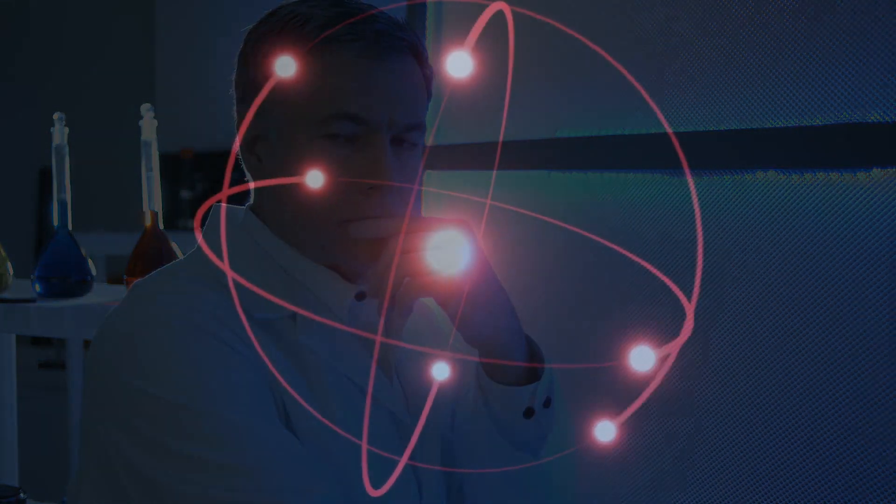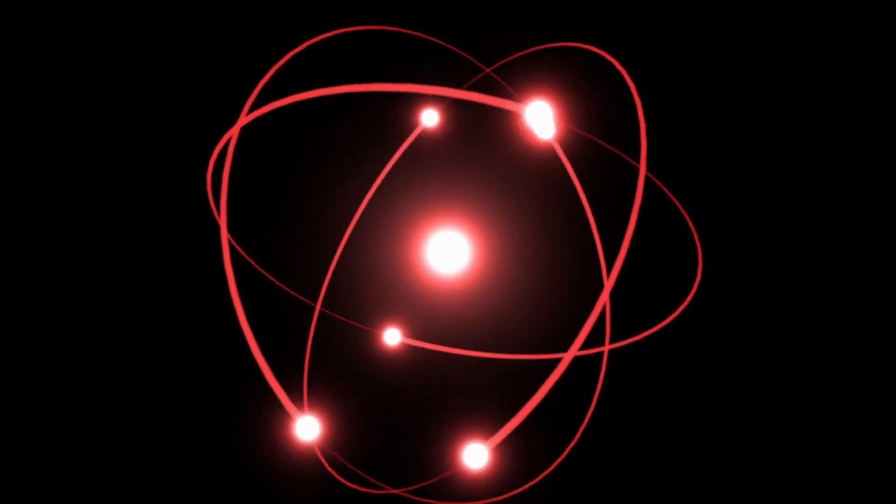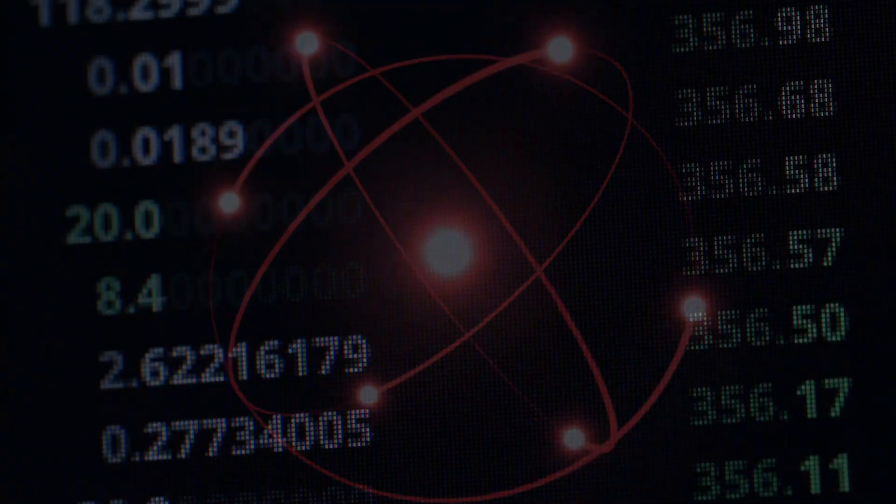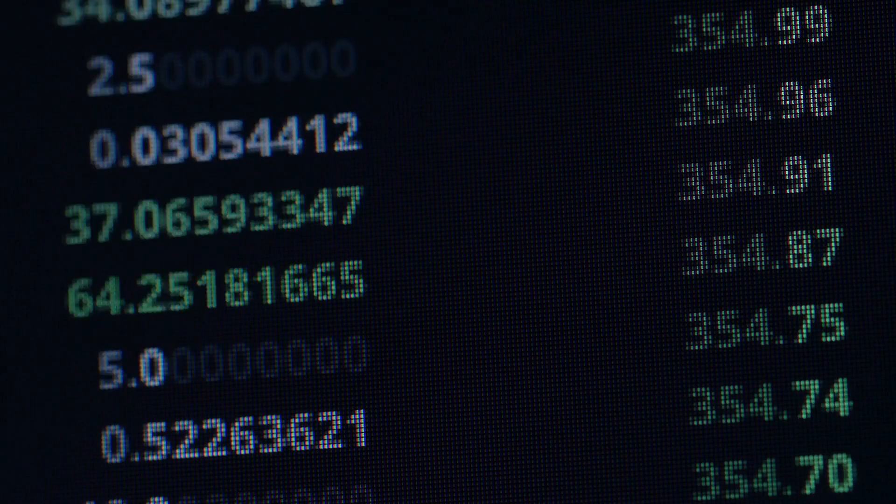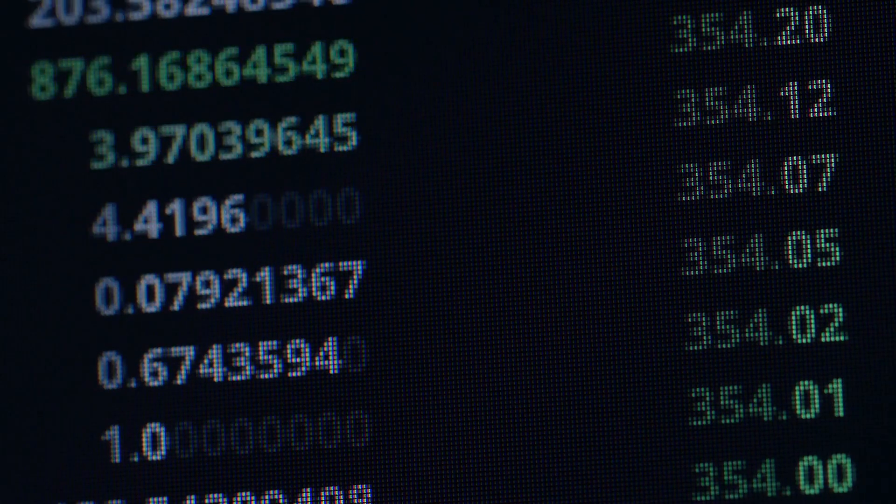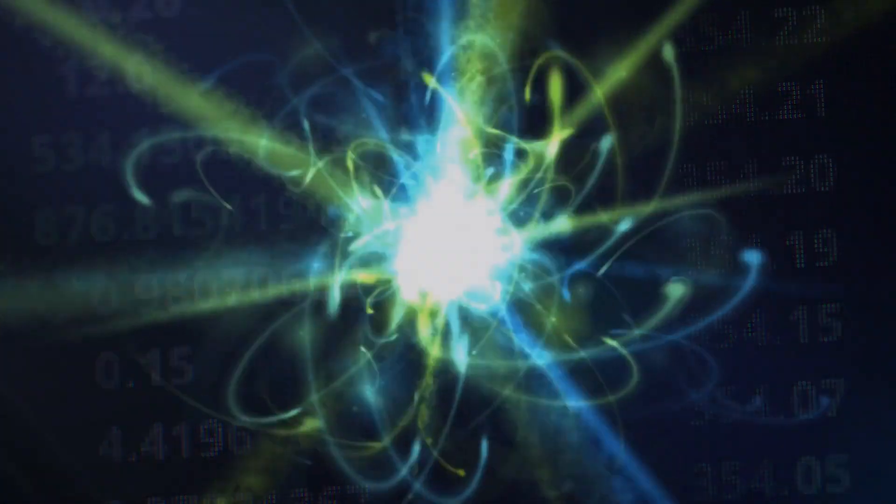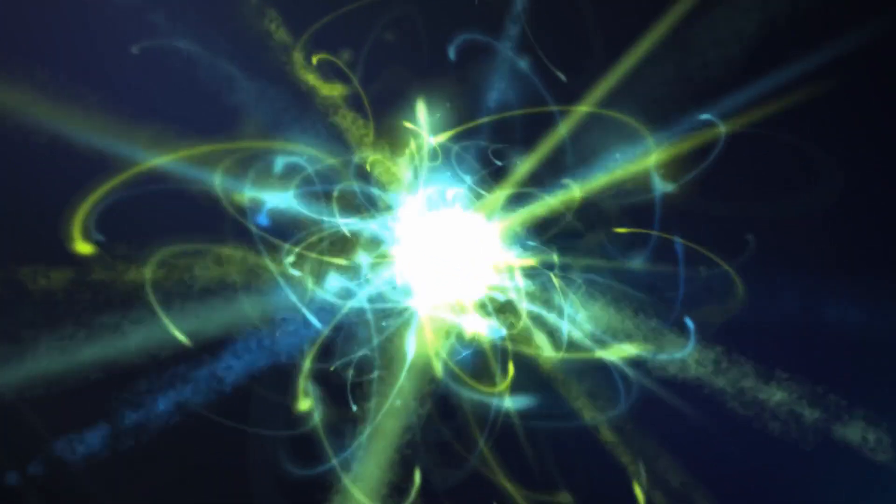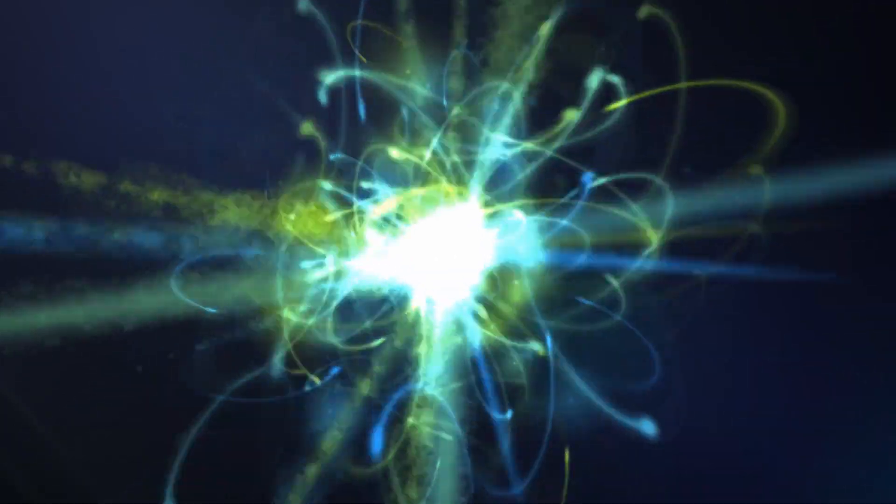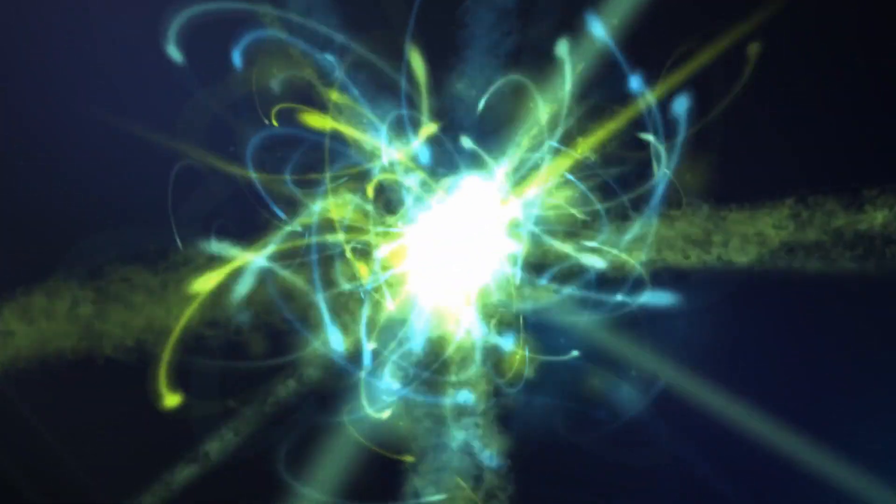However, the beta decay seemed to violate this law. In fact, when scientists measured the total energy of the recoiling nucleus and of the electron emitted in the decay, and they compared it with the total energy of the initial nucleus before the decay, they found out that the two measurements did not match. In every decay, there was always some missing energy. In the final state, the electron was always carrying away less energy than what was expected.